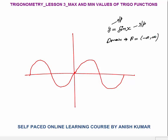Now what will be the range or output for all real numbers? This is the output diagram of y = sin x. The x-axis gives input and the y-axis gives output. sin(0) = 0. sin(π/2) = 1, which is this value equal to 1. sin(90°) = 1.